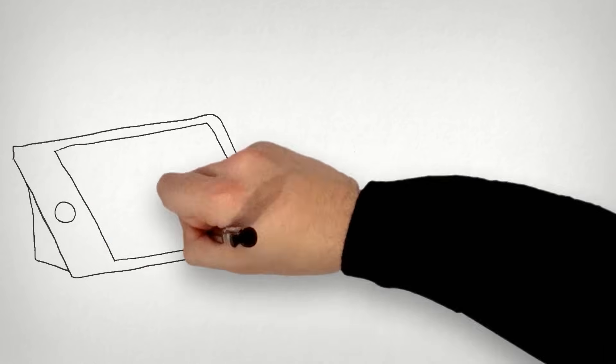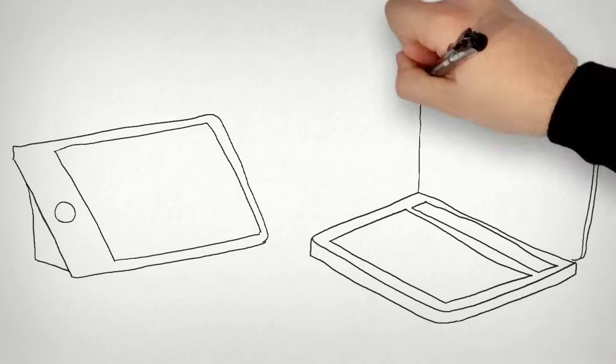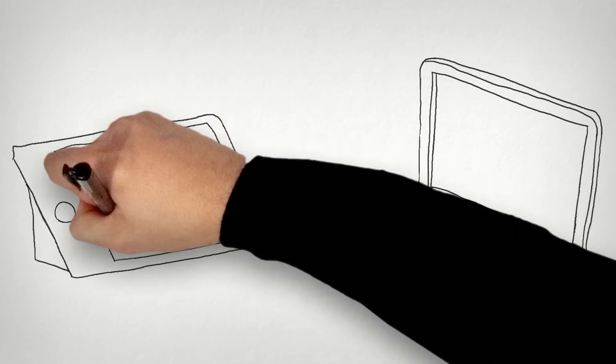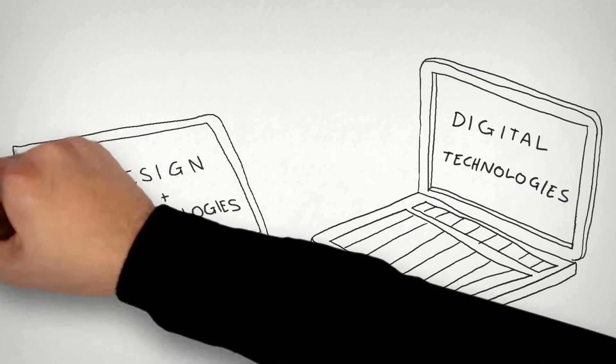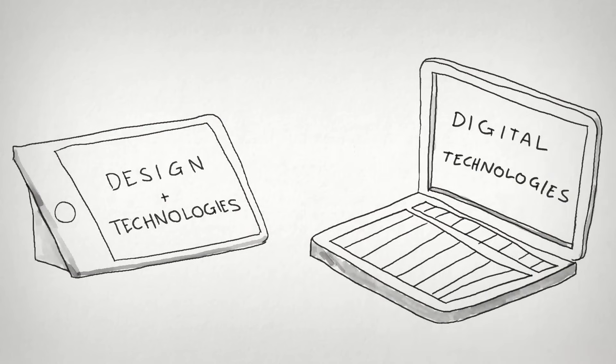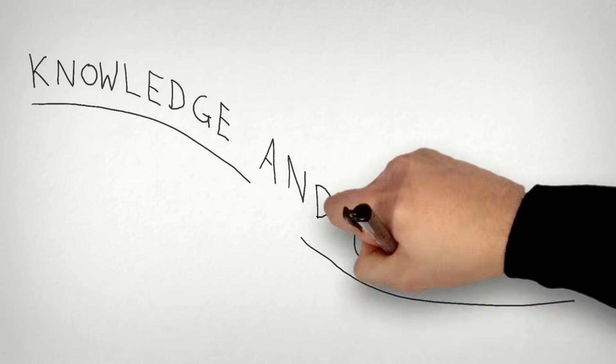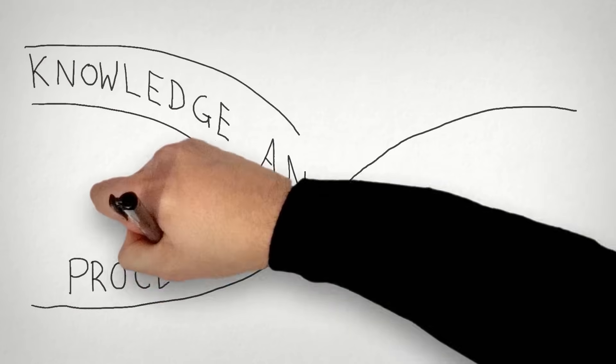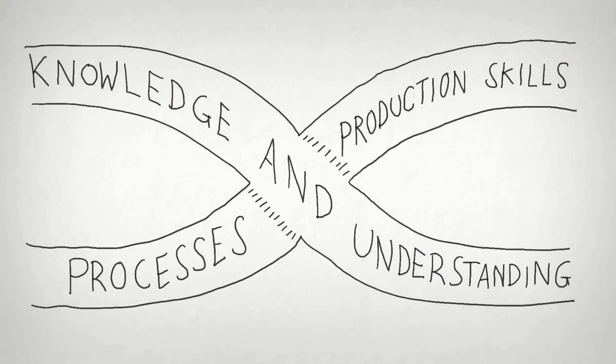Technologies in the Australian curriculum are divided into two distinct but connected subjects. They are design and technologies and digital technologies. Both of these subjects have two interwoven strands, knowledge and understanding and processes and production skills.